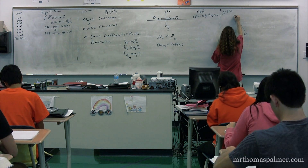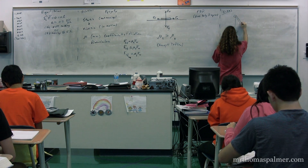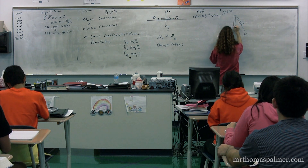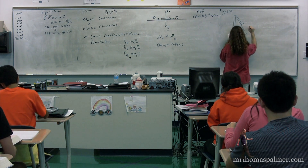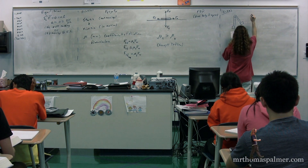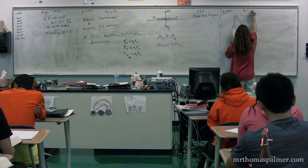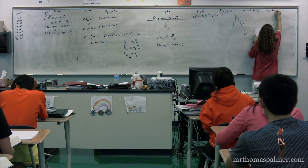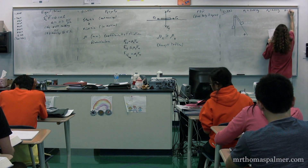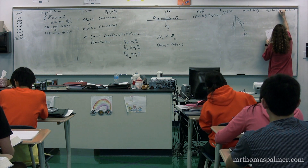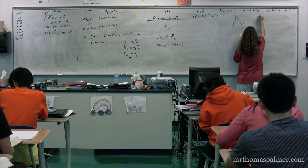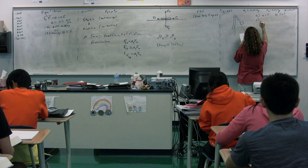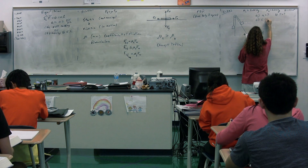Two objects are connected by a light string that passes over a frictionless pulley as in figure 5.26. Draw free body diagrams of both objects. If the incline is frictionless and mass 1 equals 2.00 kilograms, mass 2 equals 6.00 kilograms, and theta equals 55.0 degrees, find A, the accelerations of the objects, B, the tension in the string, and C, the speed of each object 2.00 seconds after being released from rest.